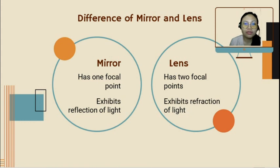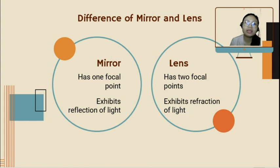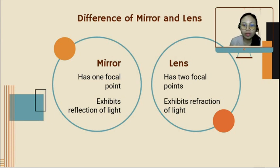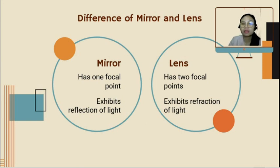Refraction of light happens when light rays pass through two different media. But again, with a lens, the light will still pass through.